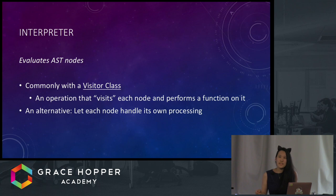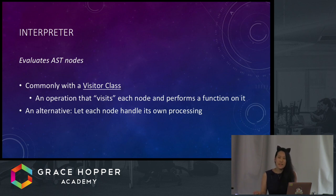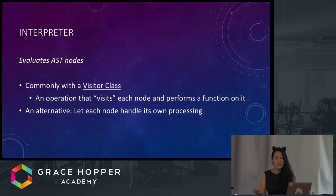In more detail, an interpreter evaluates the AST nodes, often using something called a visitor pattern. A visitor pattern involves a visitor class that is an operation that processes each node on the AST without altering the node itself or even knowing what kind of data each node possesses. But another way is to let each node know how to handle itself instead.